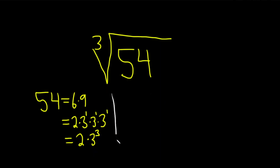So now what we do is we go back to our problem and we replace the 54 with what we've done. So this is the cube root of 2 times 3 cubed.